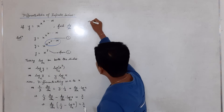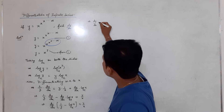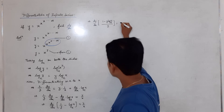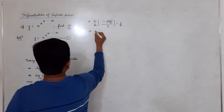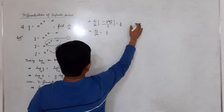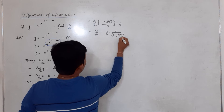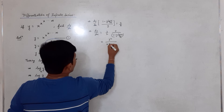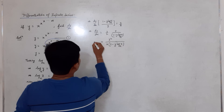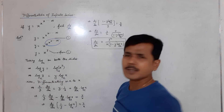On the right-hand side we have y upon x. Taking dy/dx common: 1 upon y minus log of x, and the right-hand side is y upon x. Simplifying further: dy/dx times (1 minus y times log of x) upon y equals y upon x. Leaving dy/dx on the left-hand side, it becomes y squared divided by x times (1 minus y times log of x). This is our solution.